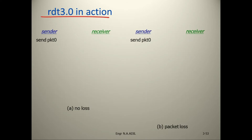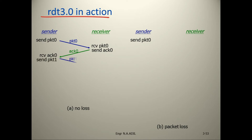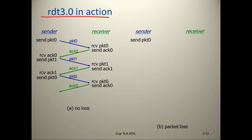RDT 3.0 in action — example. Sender sends packet 0; receiver receives packet 0 and sends acknowledgement 0; sender receives acknowledgement 0 and sends packet 1; receiver sends acknowledgement 1. This is the no-loss scenario.